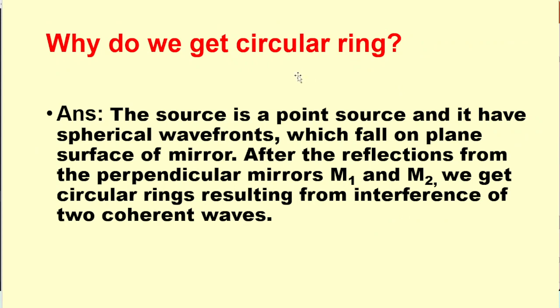Why do we get circular rings? Because the source is a point source and it has spherical wave fronts which fall on the plane surface of the mirror. After the reflection from the perpendicular mirrors M1 and M2, we get the circular rings resulting from interference of two coherent waves.